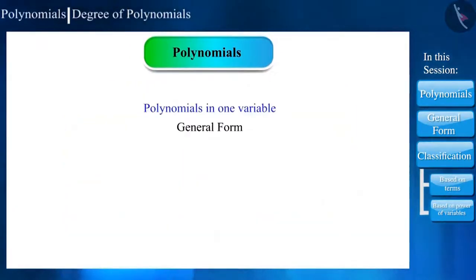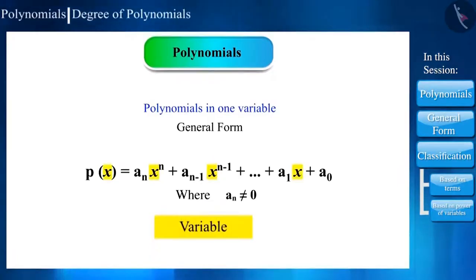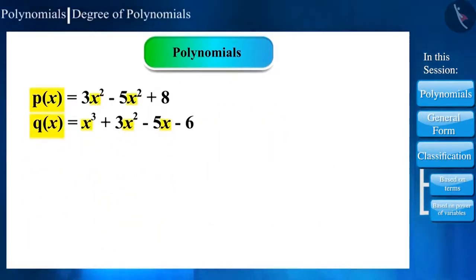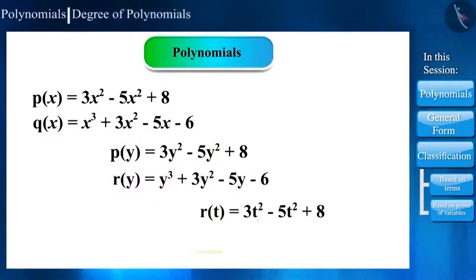General form of polynomials is expressed in this manner. Where x is called variable, a_n, a_(n-1), a_1 are coefficients, and a_0 is a constant. Polynomials are expressed as P of x, Q of x or according to the variables P of y, R of y or R of t, Q of t.